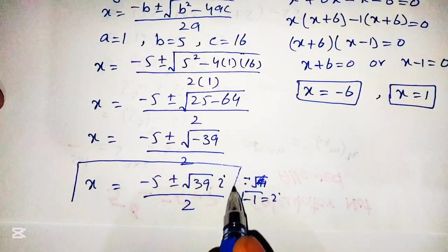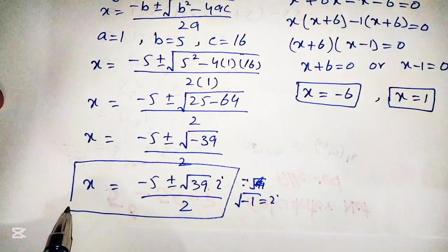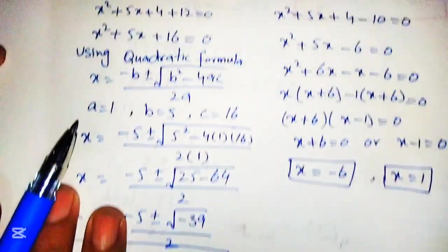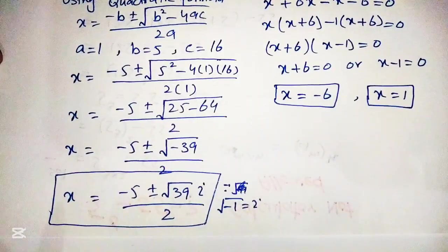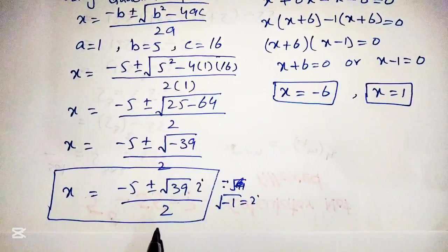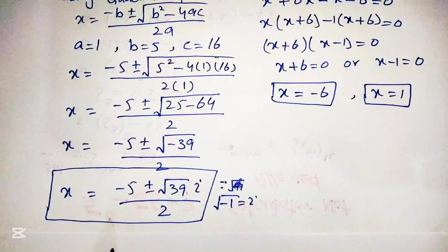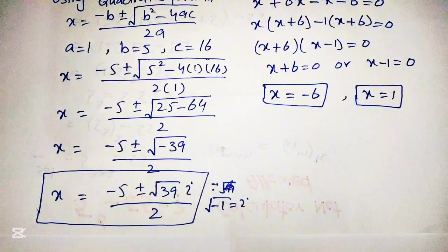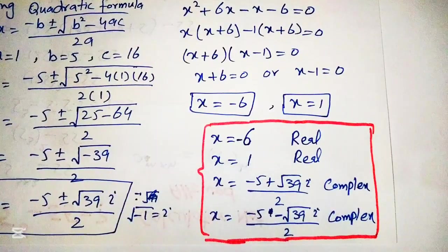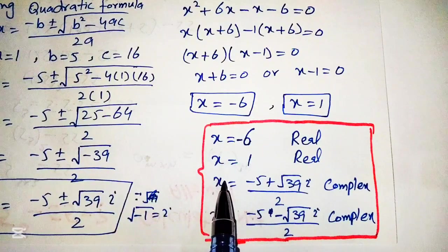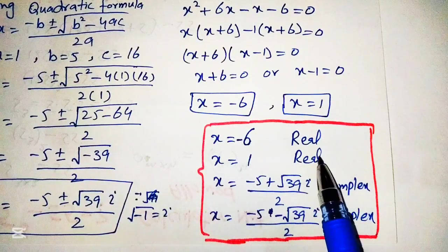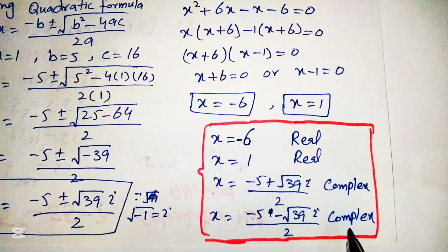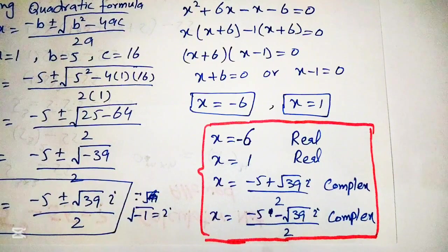These are the roots of the given equation. We can see that these are complex roots. Hence, all four roots of the given equation have been found: two are real roots (x equals 1 and x equals minus 6) and two are complex roots. Thank you so much for watching this video. Please subscribe to my channel for more interesting videos.